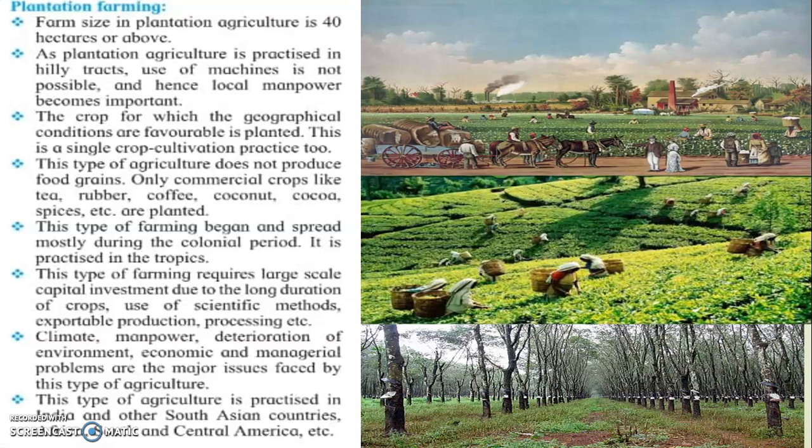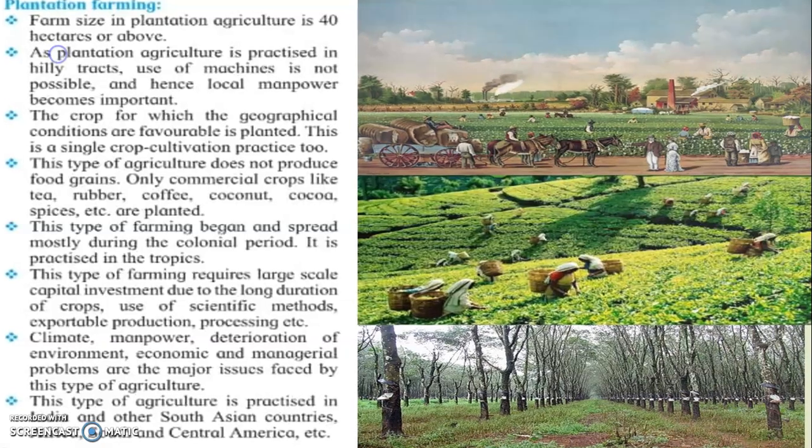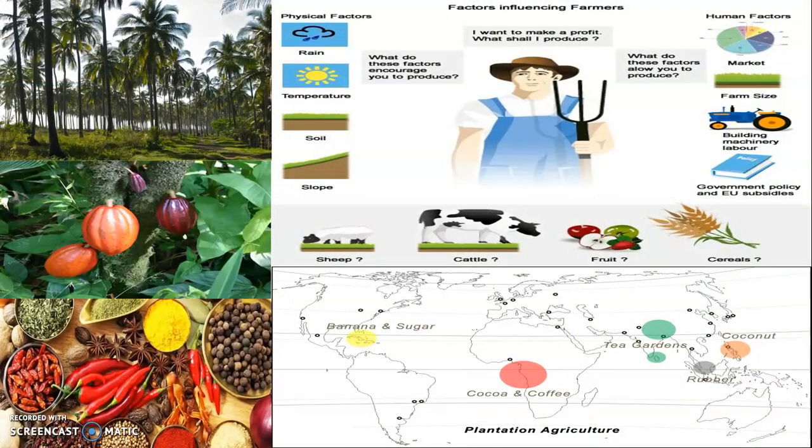In plantation farming, commercial plants are grown such as tea, rubber, coffee, coconut, cocoa, and different types of spices. The pictures show tea plantation, rubber plantation, and coconut plantation. Cocoa beans — from which you prepare cocoa powder and chocolate — are also cultivated. Different spices like chili, clove, and cardamom are grown in plantation farming.